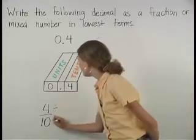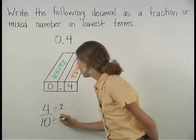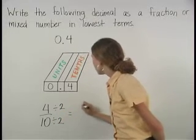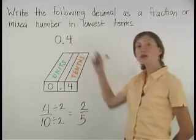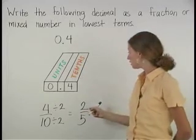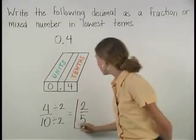So if we divide the numerator and the denominator by 2, we get 2 fifths. So 0.4 can be written as the fraction 2 fifths, which is in lowest terms.